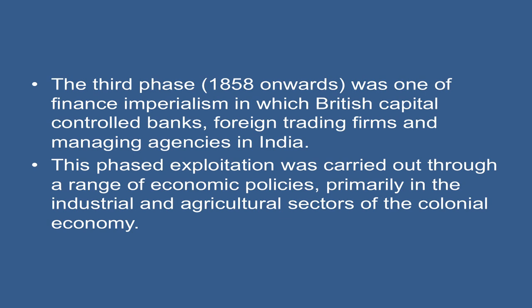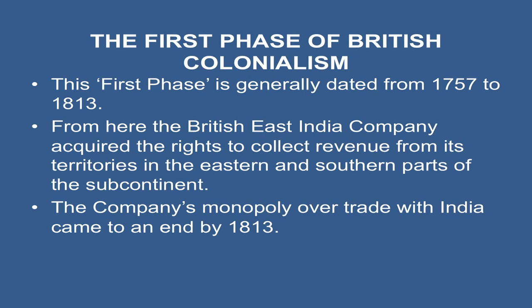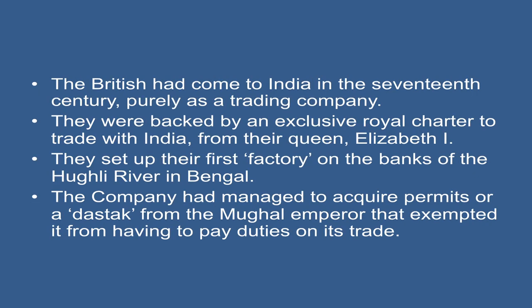The first phase is generally dated from 1757 to 1813, when the British East India Company acquired the rights to collect revenue from its territories in the eastern and southern parts of the subcontinent. The company's monopoly over trade with India came to an end by 1813. The British had come to India in the 17th century purely as a trading company, backed by an exclusive royal charter to trade with India from Queen Elizabeth the First.